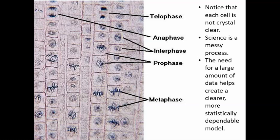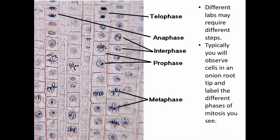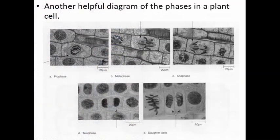Different labs may require different steps, but typically you'll observe these cells in an onion root tip and label the different phases of mitosis that you see. Here's another helpful diagram of the phases in the plant cell which was this onion root tip.